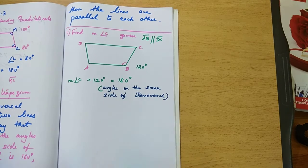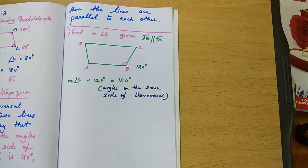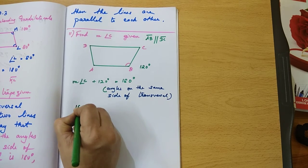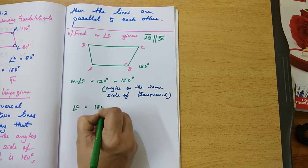So now you can easily find the measure of angle C. Angle C is equal to 180 minus 120 which is equal to 60 degrees.